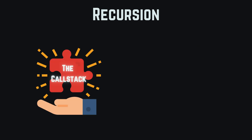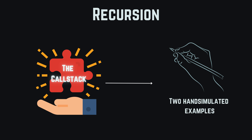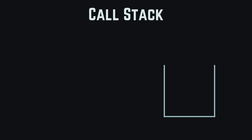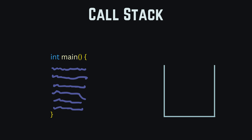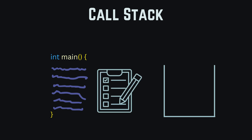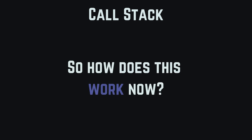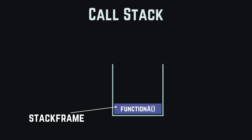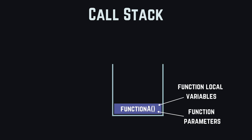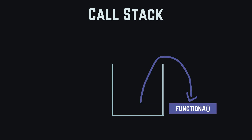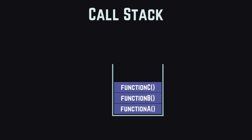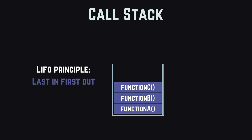So let's understand the call stack first, and then hop into our two more CS-realistic recursion hand simulations. So what is a call stack? The call stack is basically the thing that helps us keep track of function calls in our program — meaning in which order things get executed. When functions get called, they're going to be put on the stack. These elements are also called stack frames, and they contain the function's local variables and parameters. When the function reaches its end, the stack frame gets removed from the call stack. When multiple functions get put on the stack, the one on top will always be the one who gets processed first. We also call this LIFO, which stands for last in, first out.